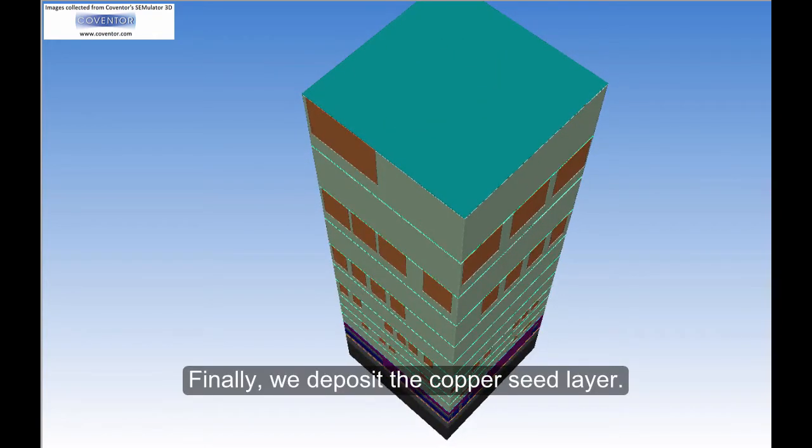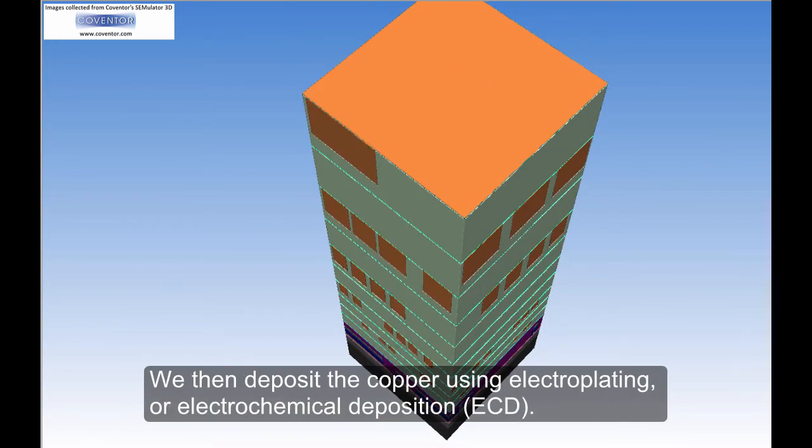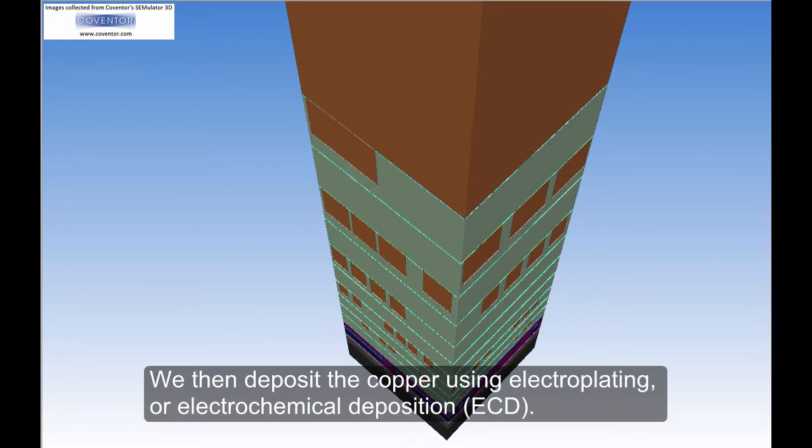Finally, we deposit the copper seed layer. We then deposit the copper using electroplating or electrochemical deposition.